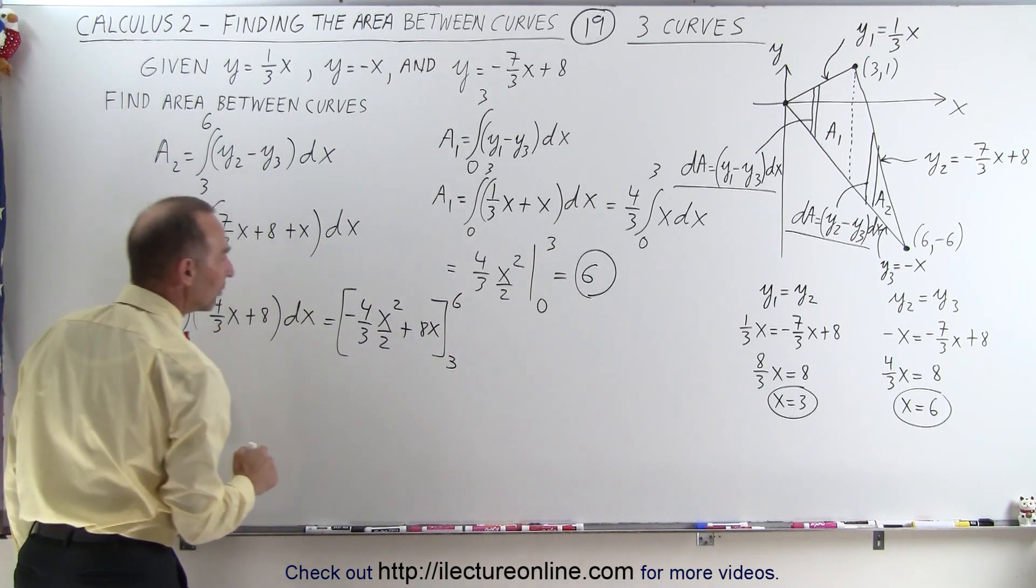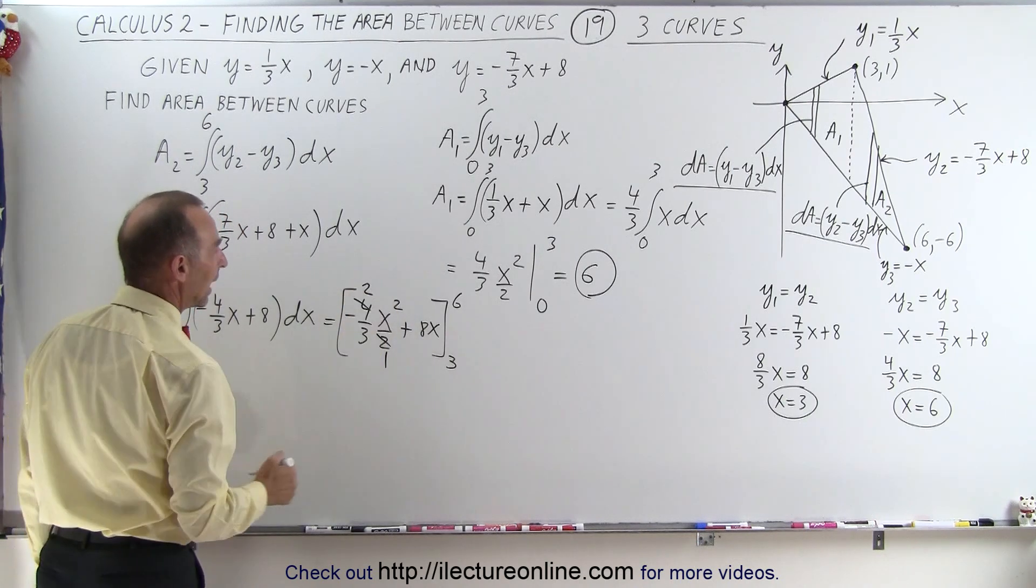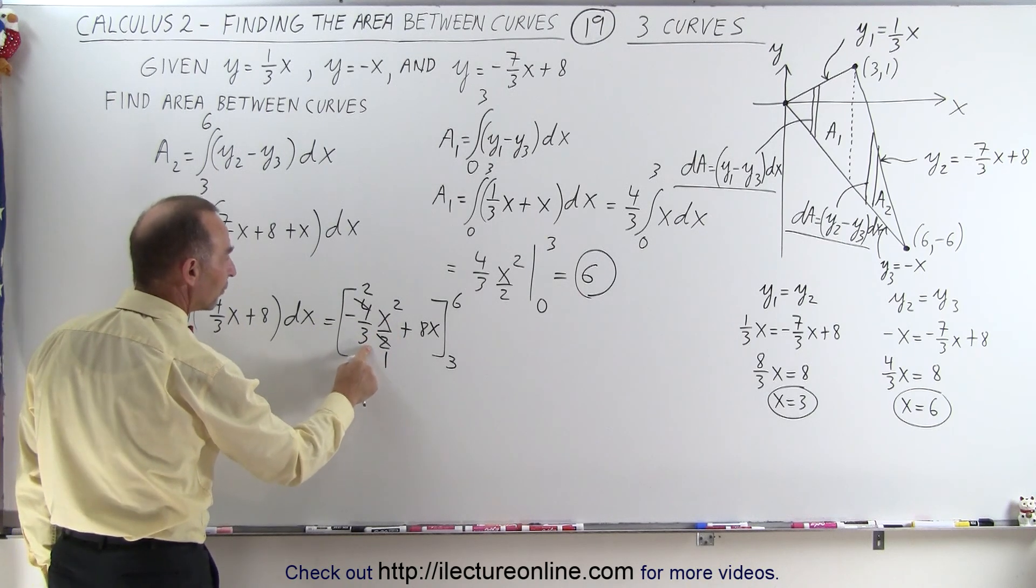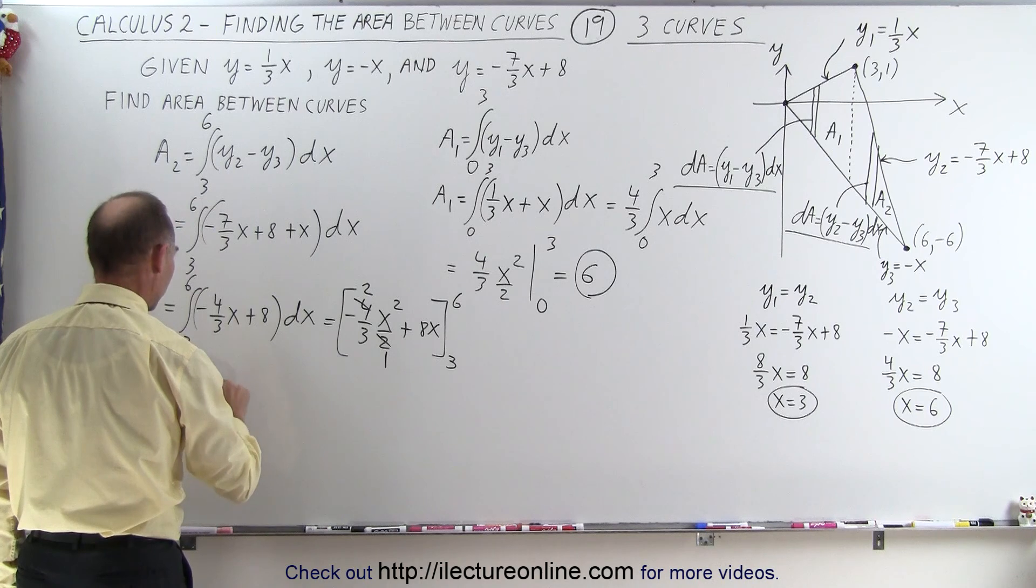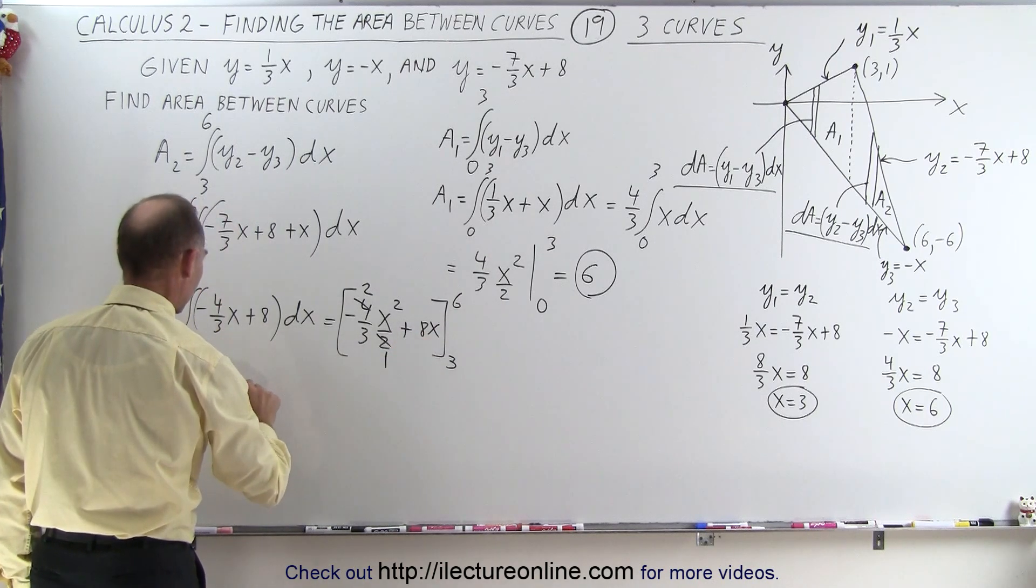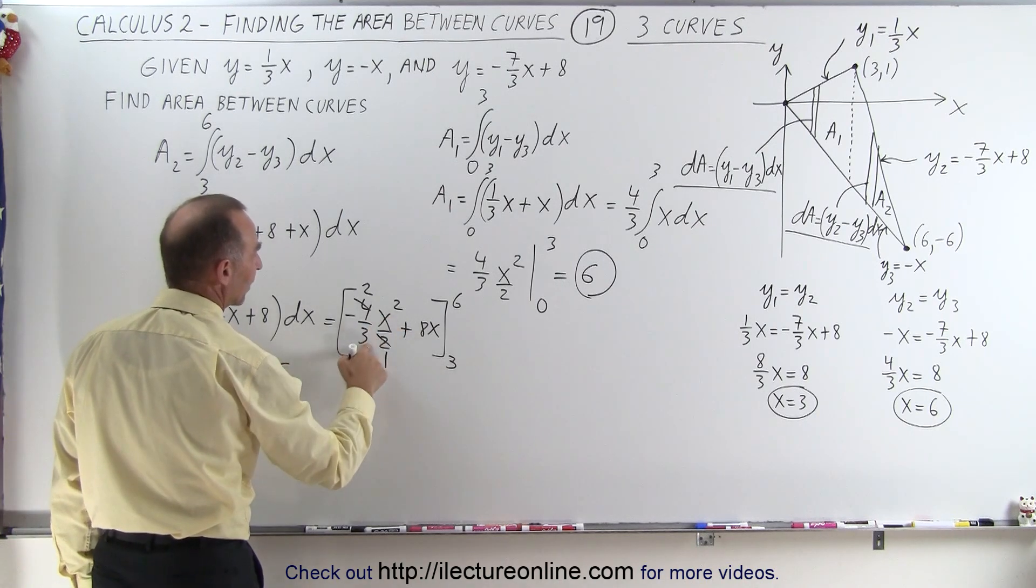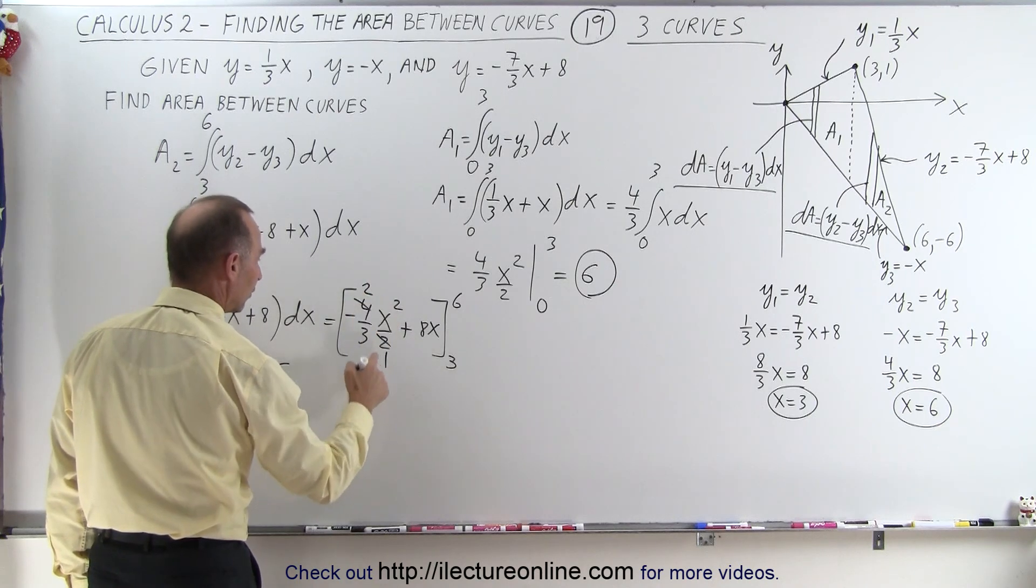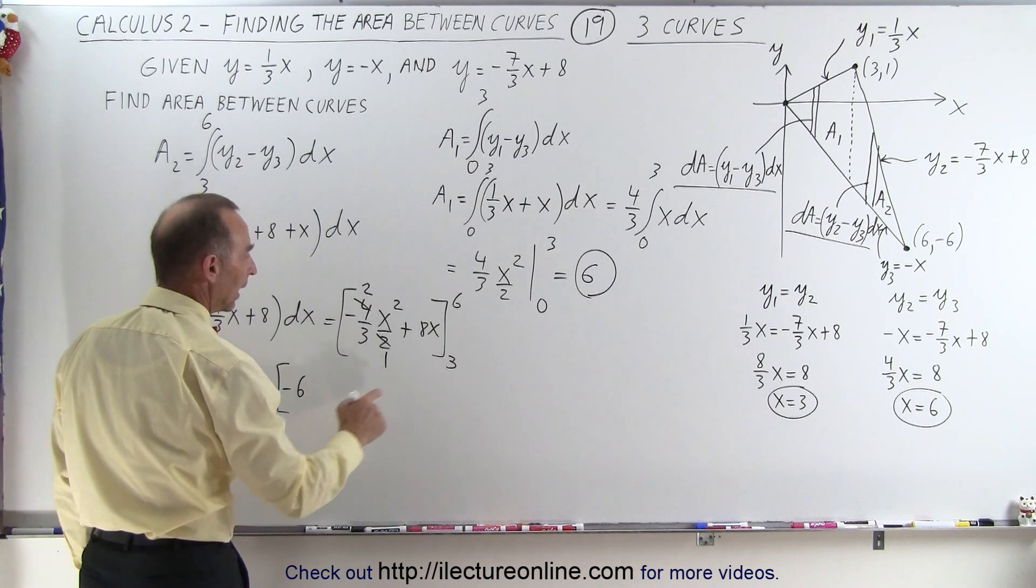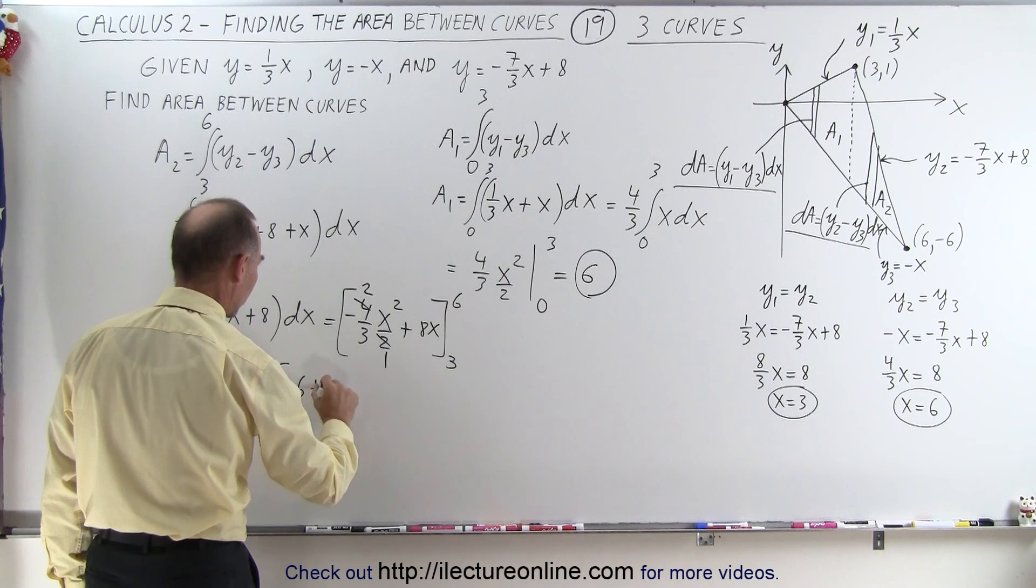So this is equal to -4/3 x squared over 2 plus 8x, evaluated from 3 to 6. So when we evaluate this, first of all, all this cancels out, that becomes 2 over 1. And 6 squared is 36, divide by 3 is 12, times 2 is 24, that's a -24. And we'll plug that in here, that's plus 48. Minus, we'll plug in the lower limit, that would be 9, divide by 3, which is 3, times 2, which is 6. Because there's a minus here, minus 6. And we'll plug in the lower limit here, that's 24, that's plus 24.